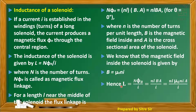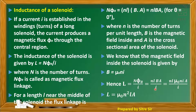We know the magnetic field inside the solenoid is B equals mu₀NI. Hence, the self-inductance of the solenoid is L equals N into phi_B by I. Substituting N into L for the number of turns, phi_B equals B into A, and B equals mu₀NI, the current I cancels and the final equation is L equals mu₀N²L times A. This is the self-inductance of a solenoid.